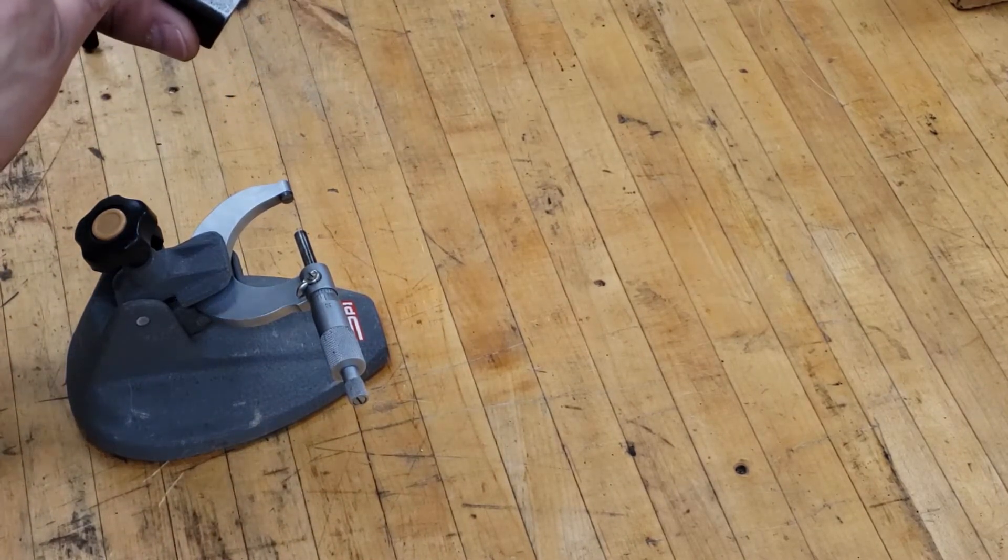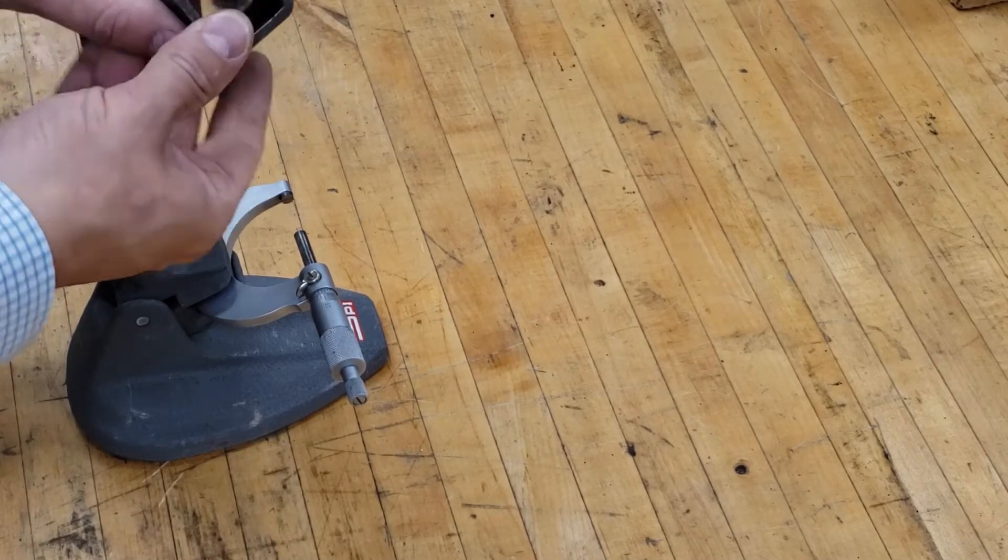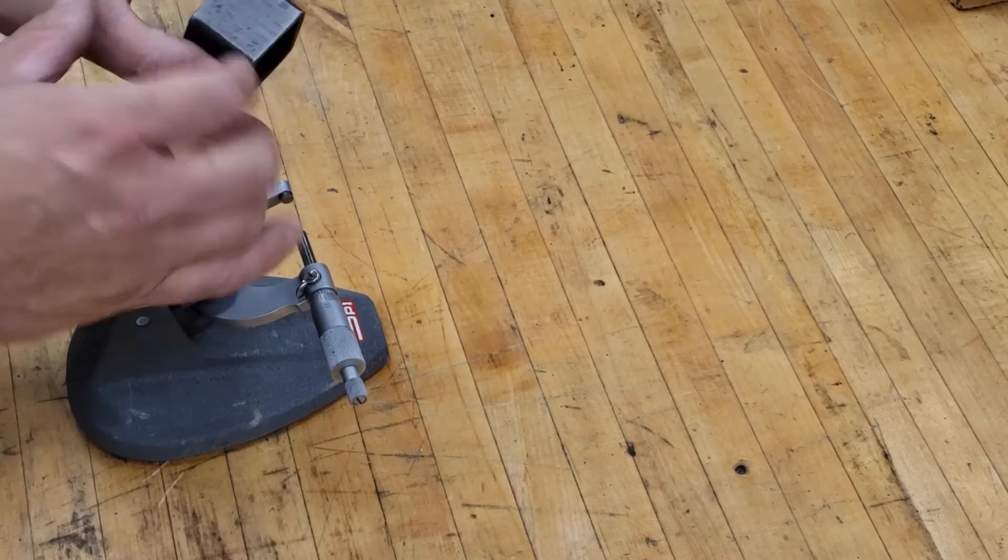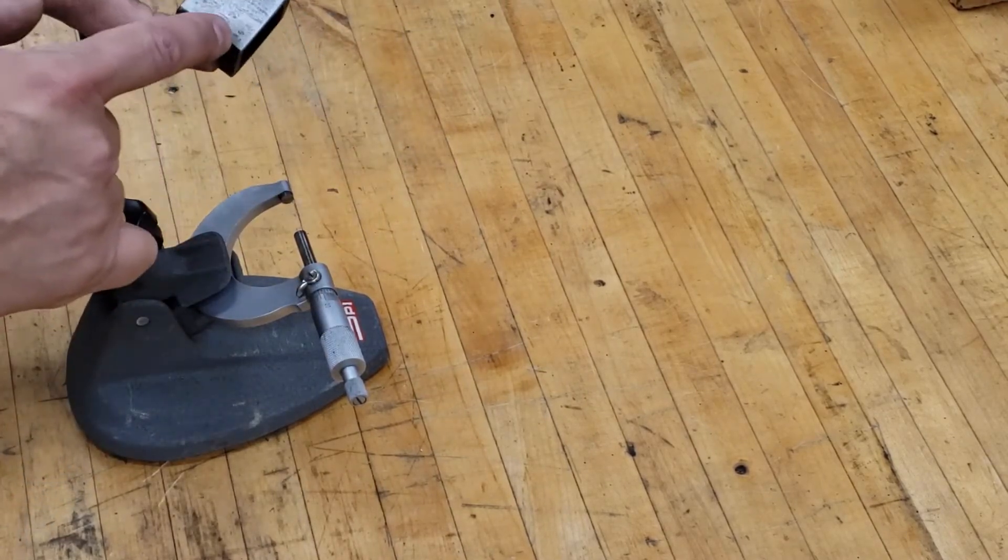Make sure that you're measuring on the accurately ground sides. There's two sides that will be a little bit shinier and smoother than the others. You want to measure across those from shiny side to shiny side.